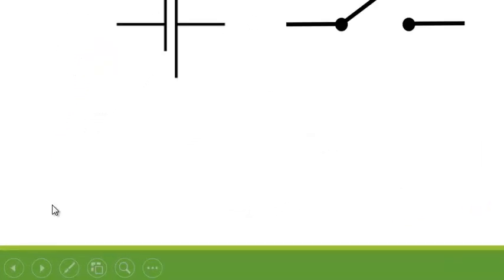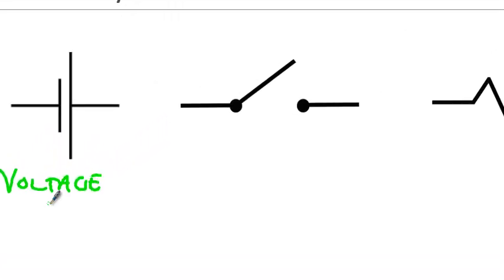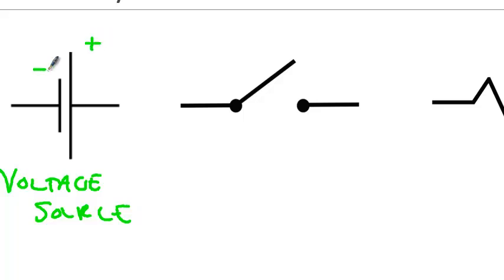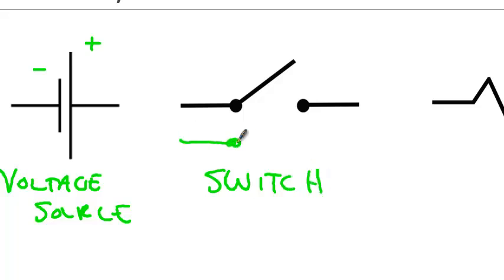The different symbols we use in circuits that may be new to you are shown here on the screen. The first one is for the voltage source: one long line and one short line. The long line represents the positive terminal; the short line represents the negative terminal. In the middle is the symbol for a switch — this is an open switch. If it were a closed switch, that line would be connected.